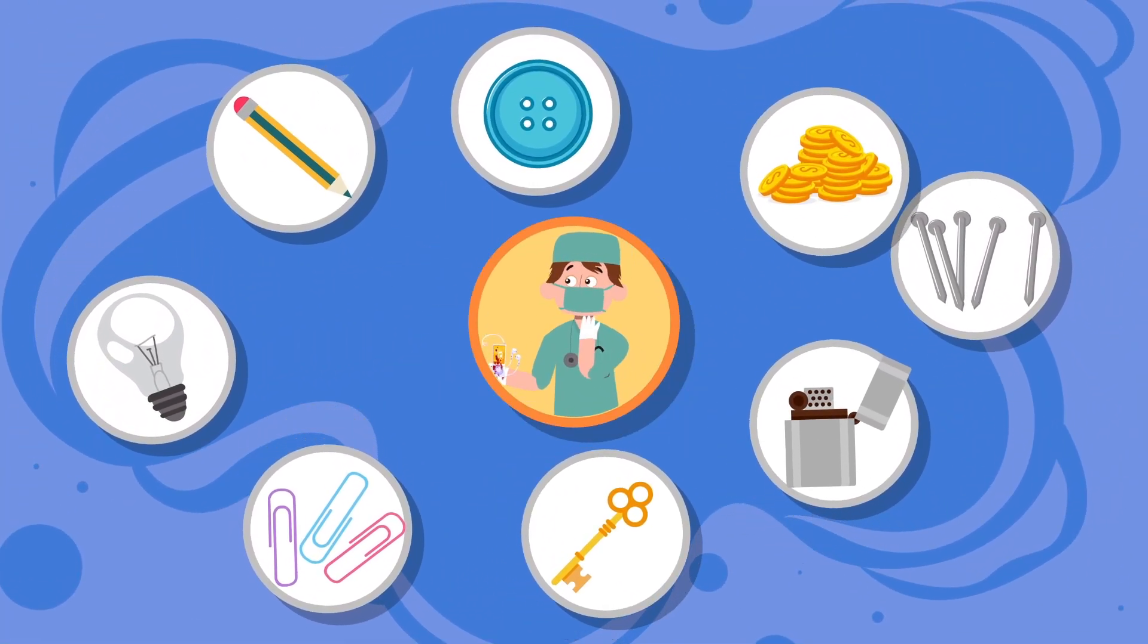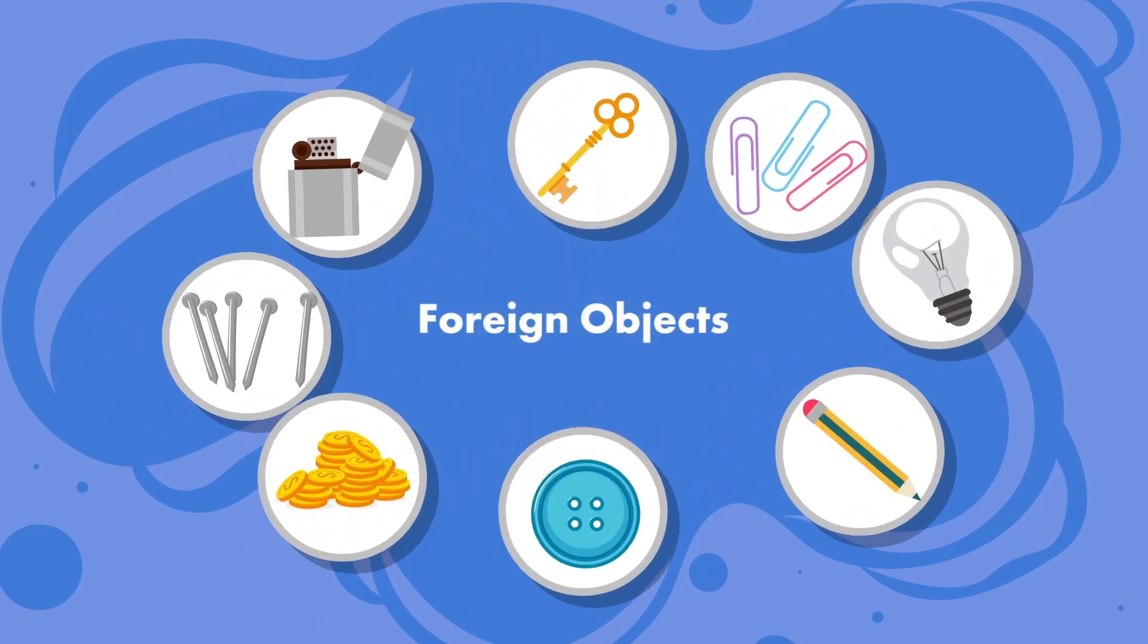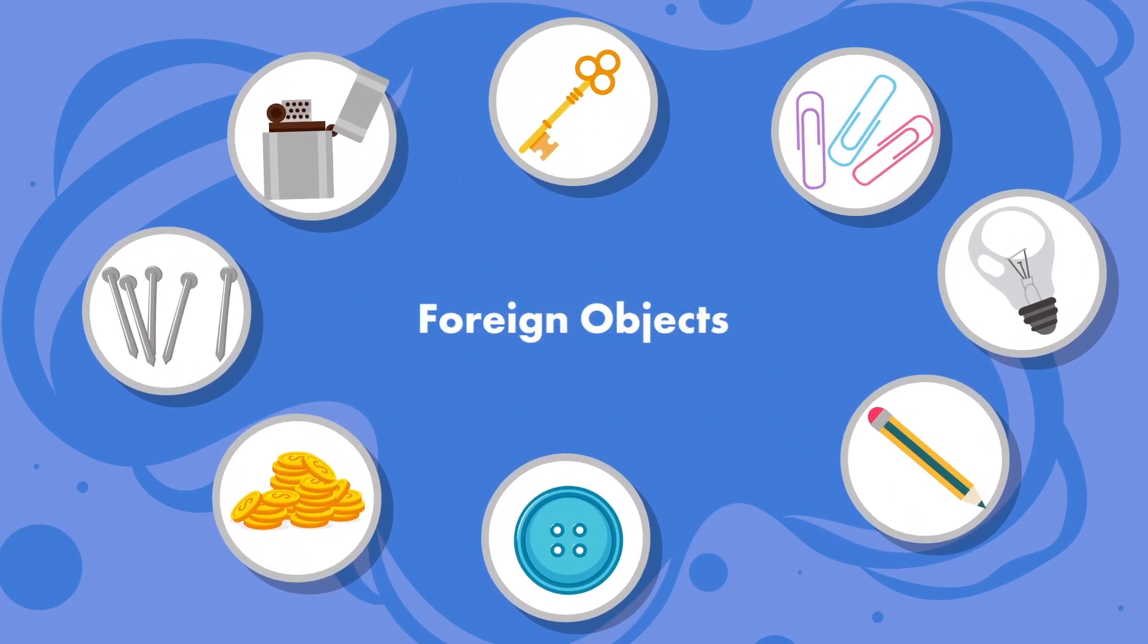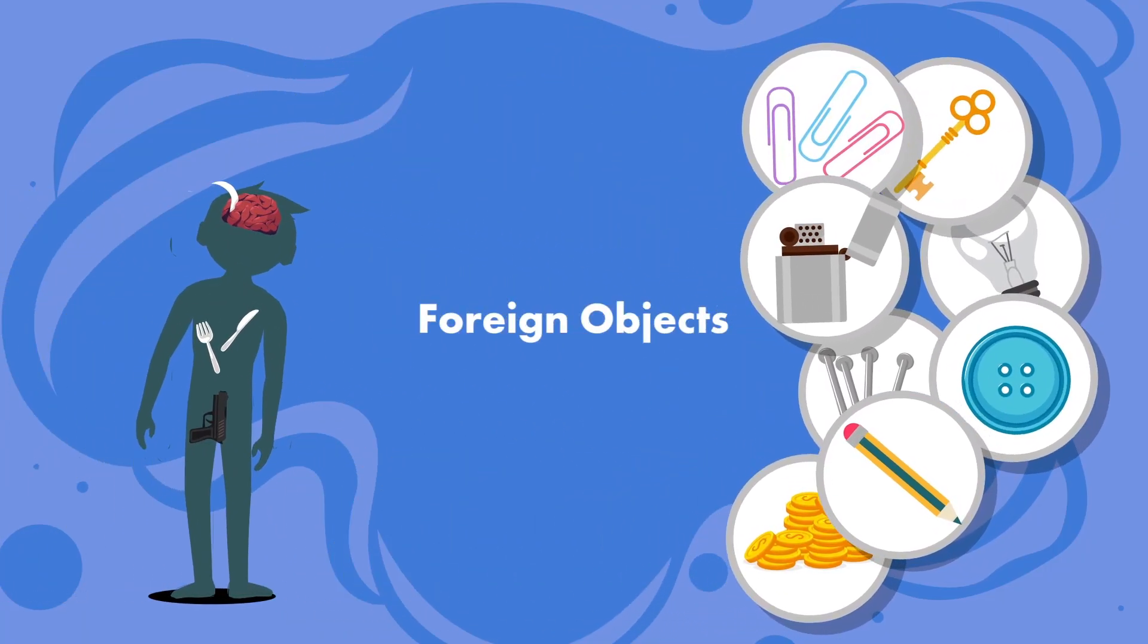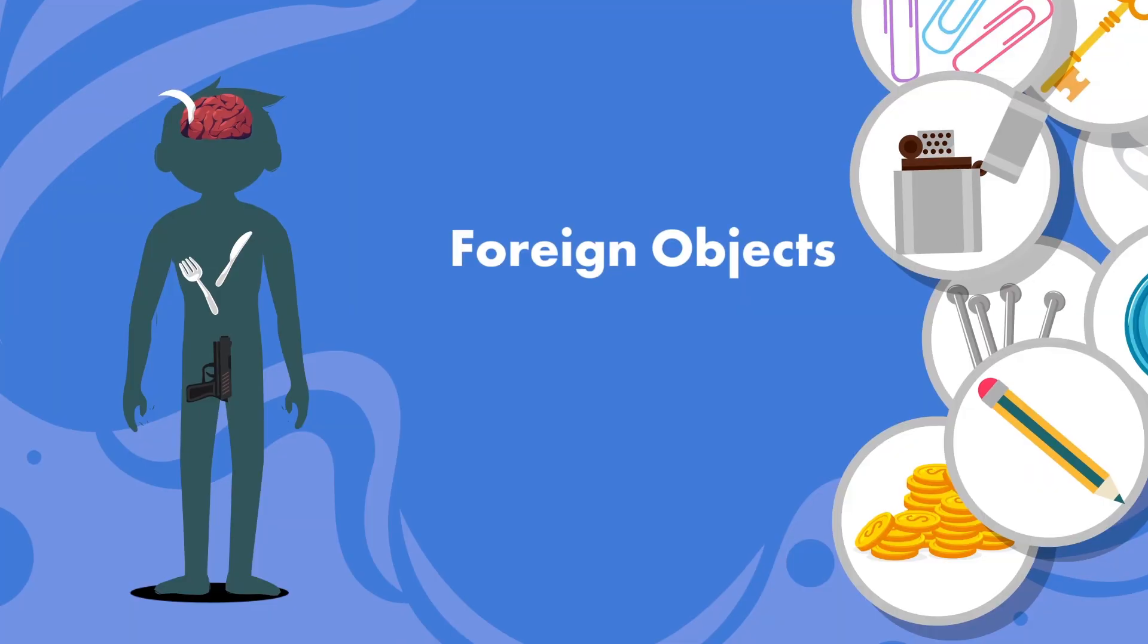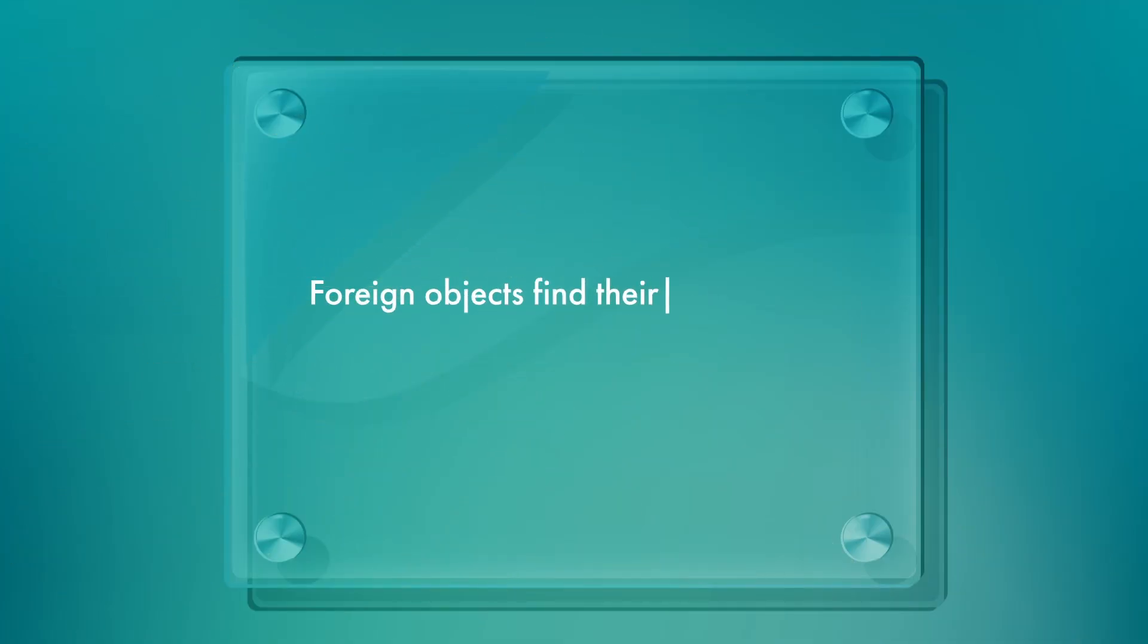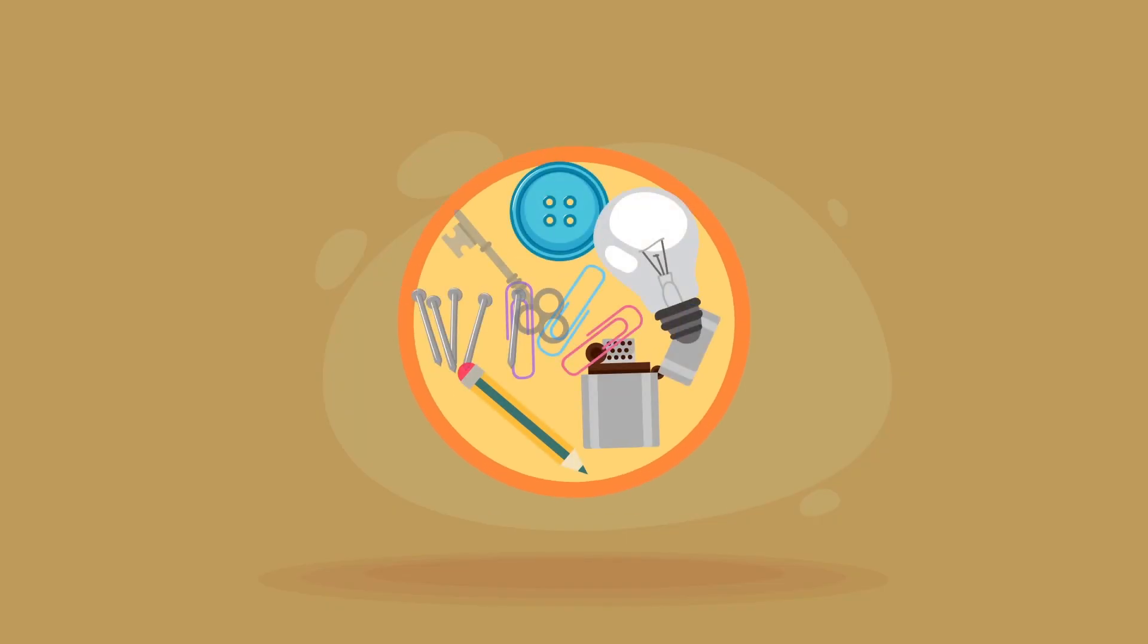This kind of stuff happens so often that doctors even have a name for things they find in our bodies that aren't supposed to be there. They call them foreign objects, probably because they are things that originate from outside of us, and also they probably don't speak the local language, also known as body language.